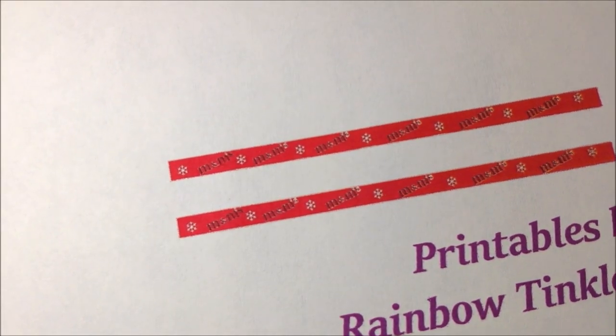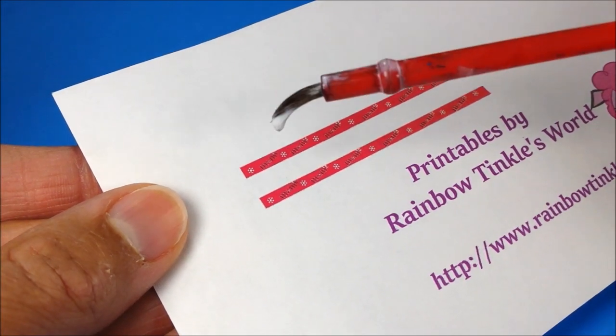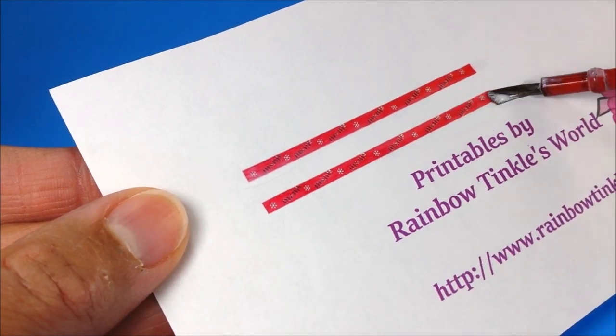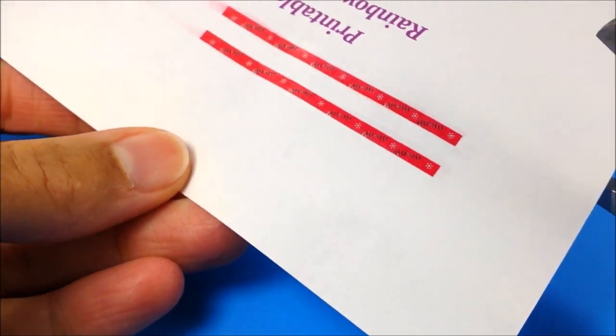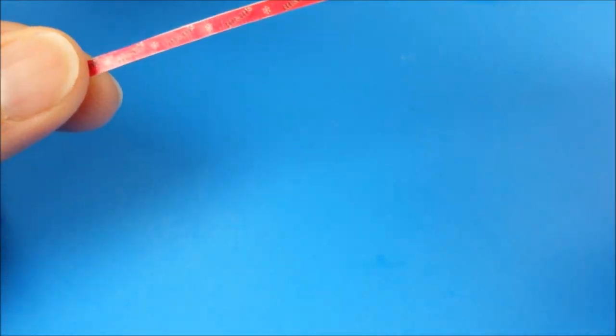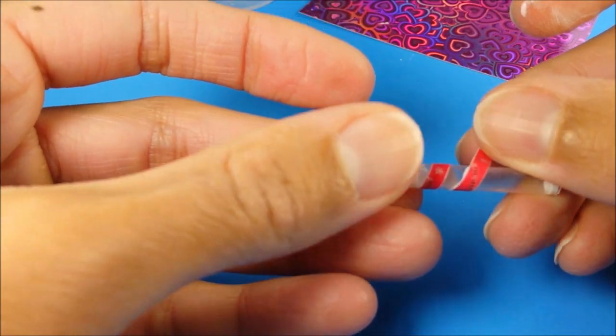Then I print out the label, cover it with more glossy Mod Podge, and when it's dry I cut it out and glue it around my straw.